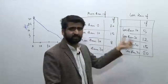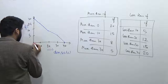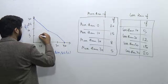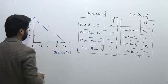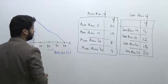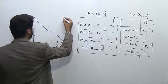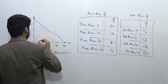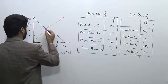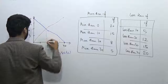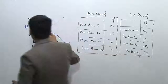Now let's plot the less than ogive curve. Less than 0 has 0 entries, so I can start from the origin. Less than 10 has 5 entries, less than 20 has 12 entries, less than 30 has 15 entries, and less than 40 has 20 entries. Joining these points gives the less than ogive curve.